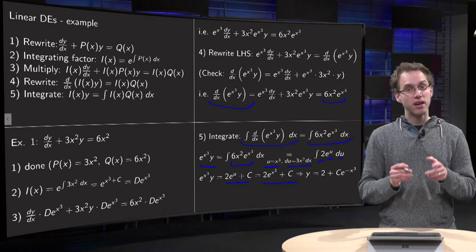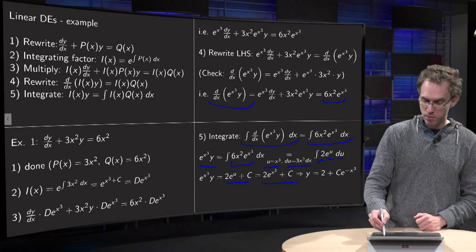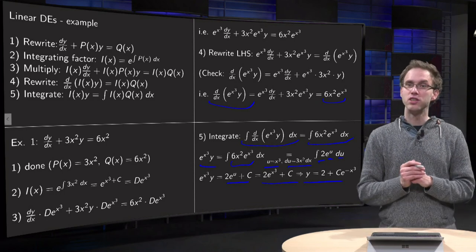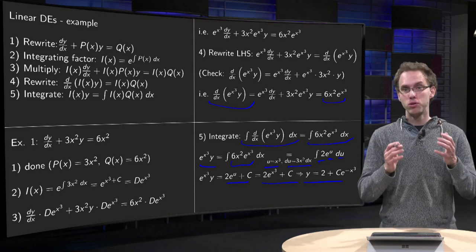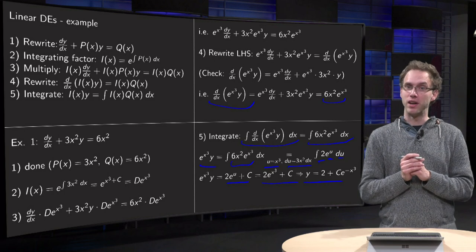And then finally we can divide by e to the power x³. So we get y equals 2 plus c over e to the power x³. So 2 plus c times e to the power minus x³.